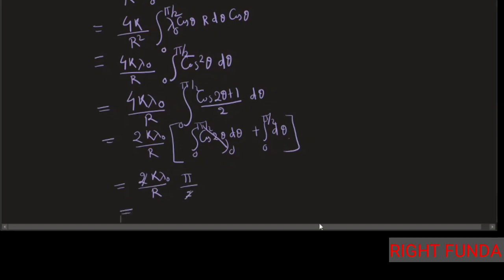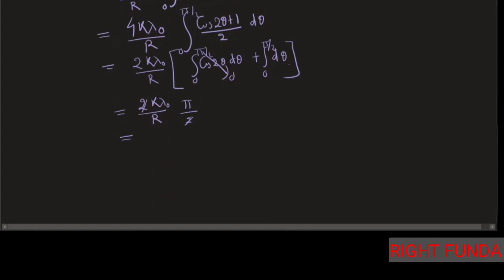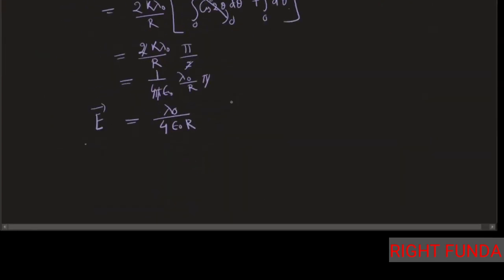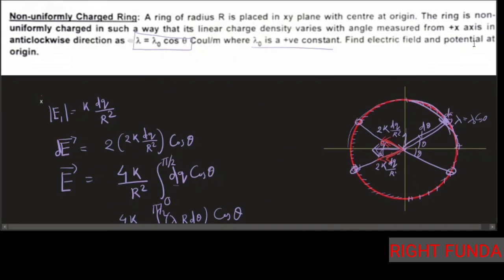Substituting k = 1/(4πε₀), the π factors cancel and the net electric field is E = λ₀/(4ε₀r). The direction of this net field, as established by our symmetry analysis, is in the negative x-direction (−î). So the electric field vector is E = −λ₀/(4ε₀r) î.